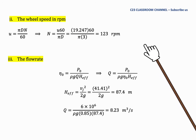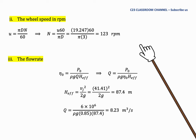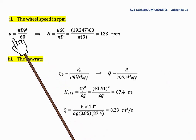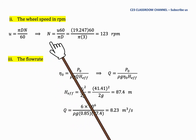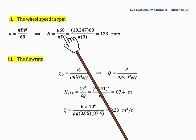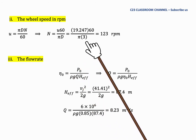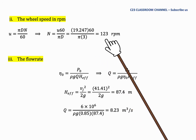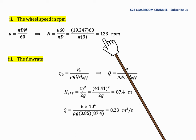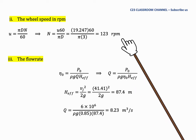Next, we calculate the wheel speed in RPM. Using the equation U equal to pi D N over 60, we rearrange to get N equal to 60U over pi D. Substituting the value of U from the previous calculation, we get N equal to 123 RPM.